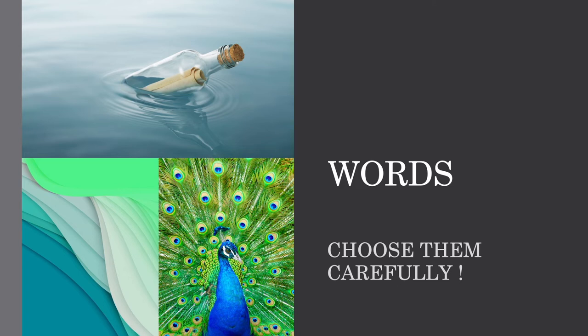Your reader should be able to visualize the characters in your narrative. If you talk about a relative or friend or foe in your personal narrative, the reader should be able to picture that person as you do. Details are critical in a narrative.